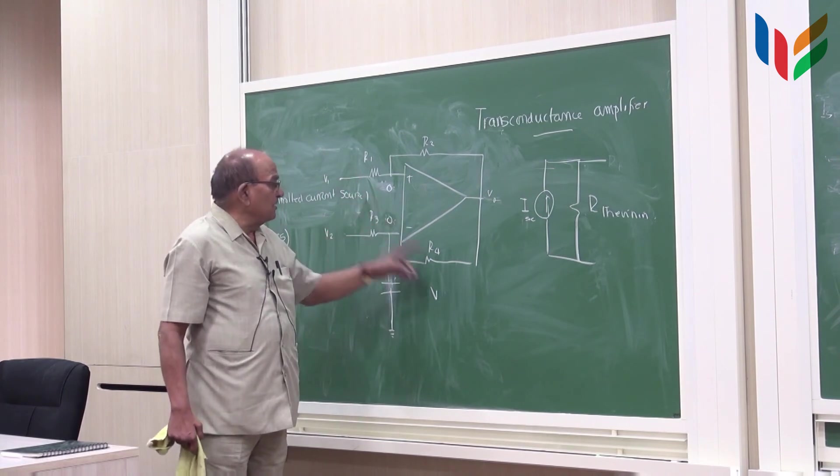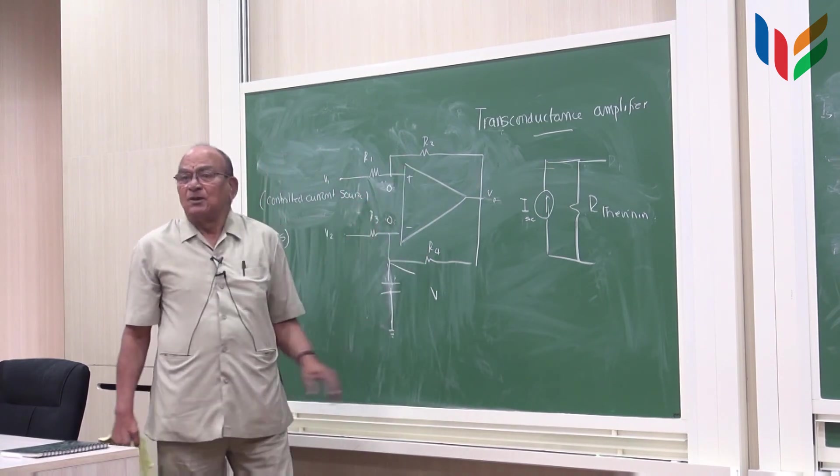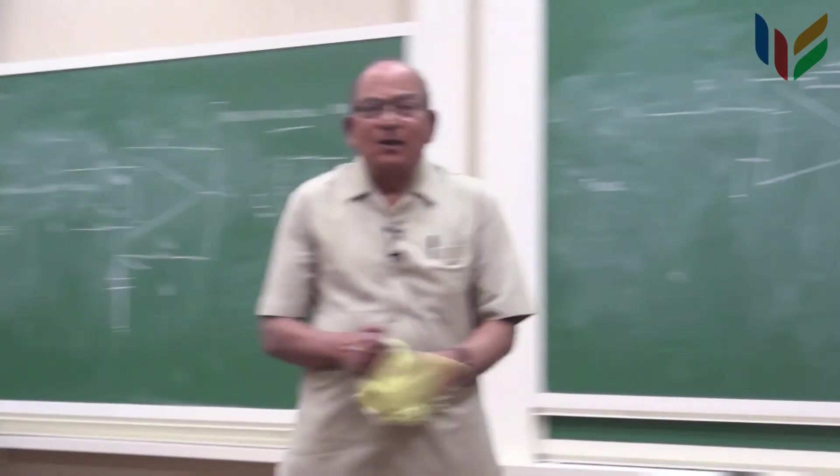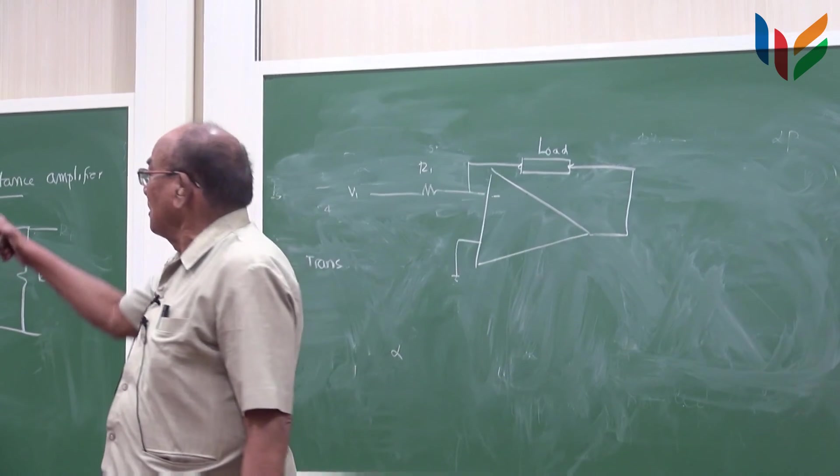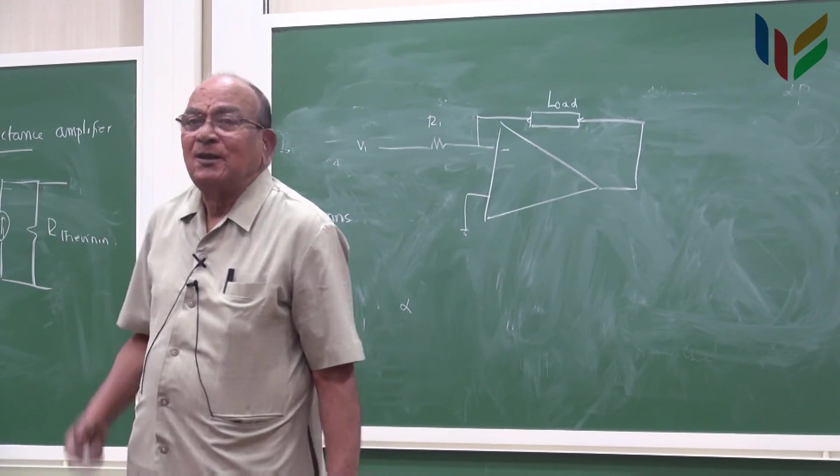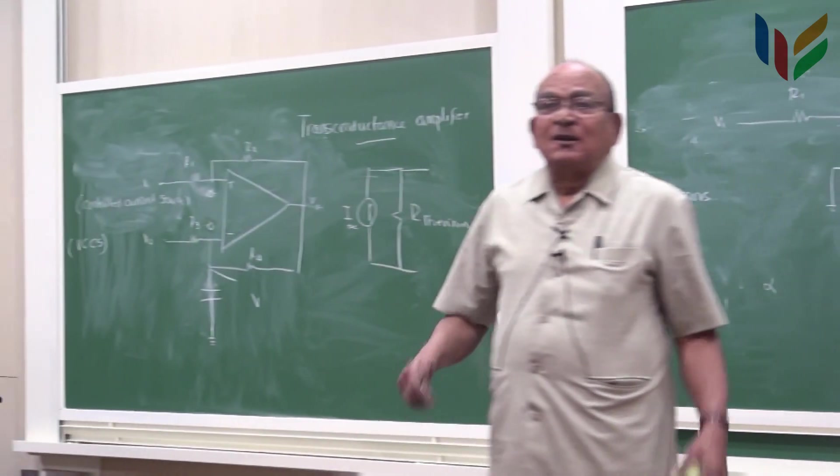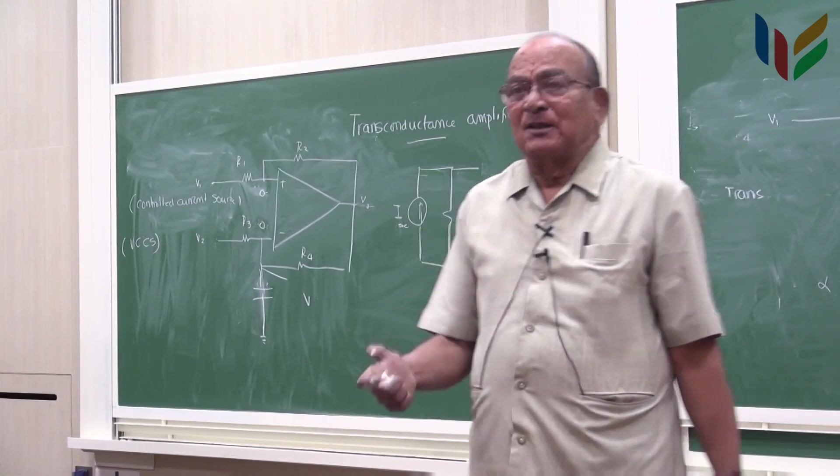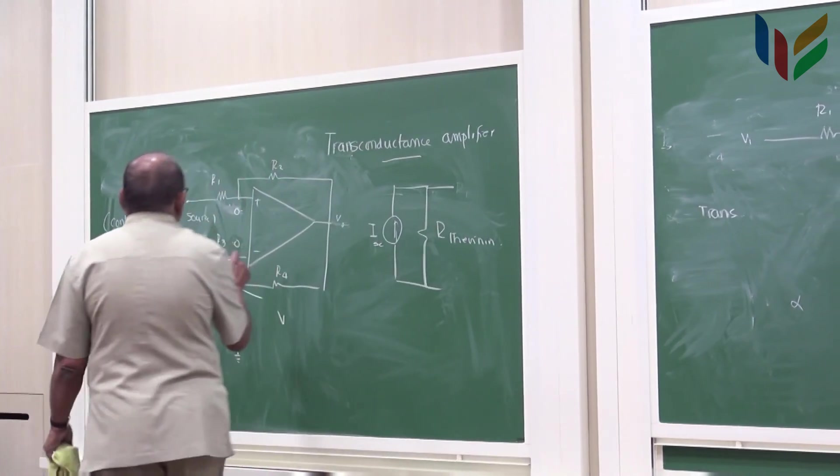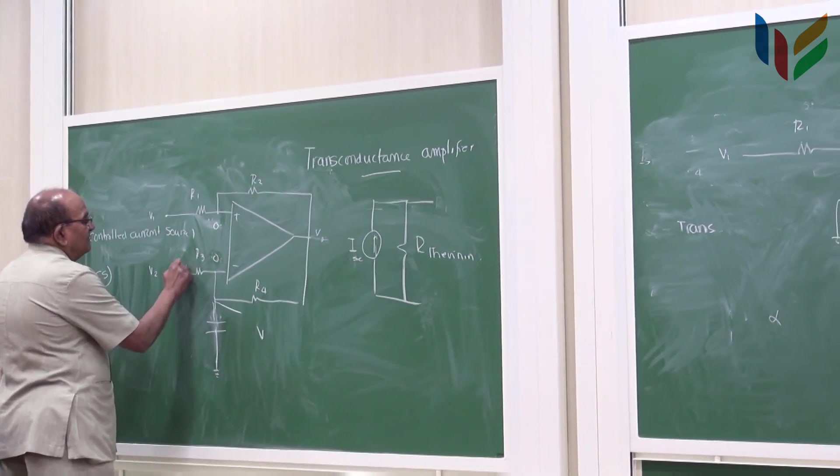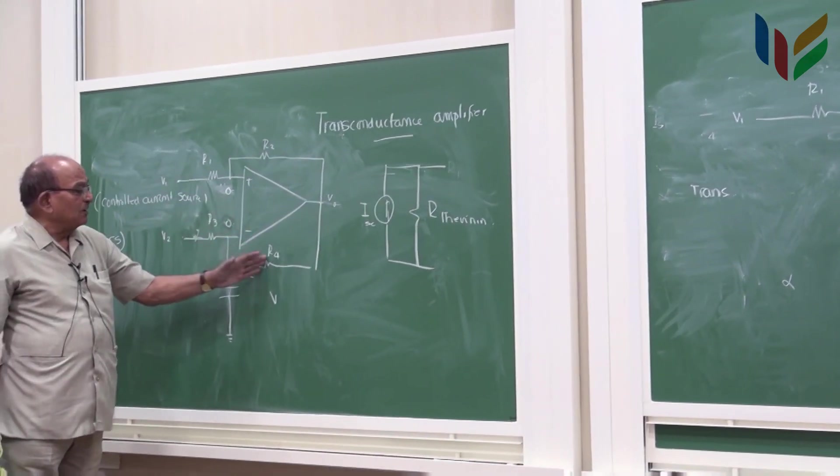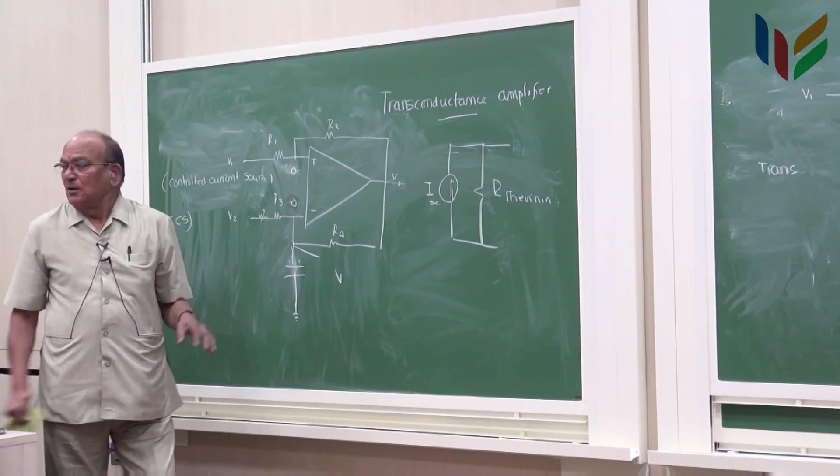Under the condition this into this is equal to this into this—R1 into R4 is equal to R3 into R2. You may have to do a bit of trimming to make sure that R1 into R4 equals R3 into R2, because the physical resistors may not have exact values. So people put a small potentiometer here and trim it to adjust the value so that this product is equal to this product.